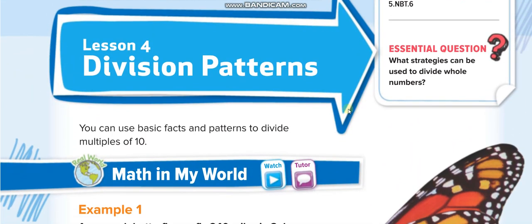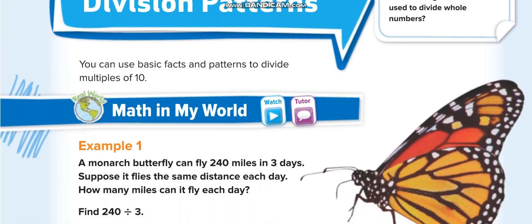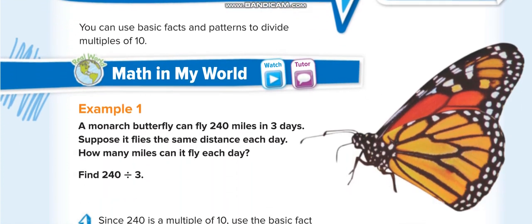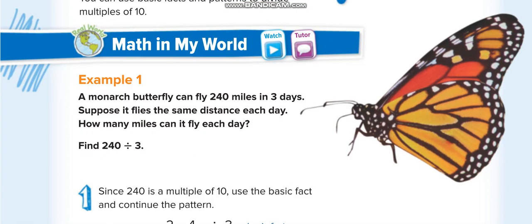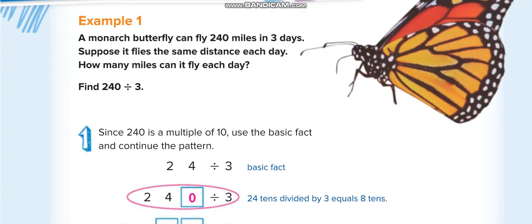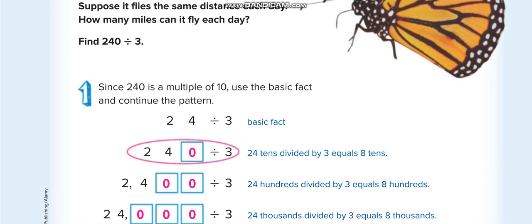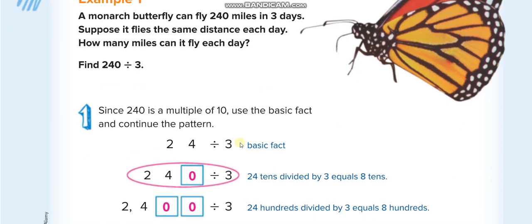In this lesson, just like the multiplication lesson we did — where we count the number of zeros, multiply, and then put the zeros back — similarly in this lesson we are dividing the same way, just with a small difference.